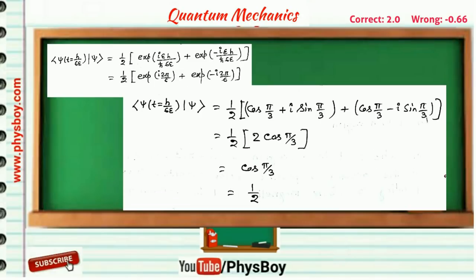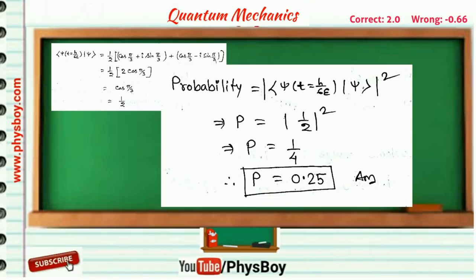You will get the product is equal to 1/2, so probability will be the square of this product, that is 1/4.